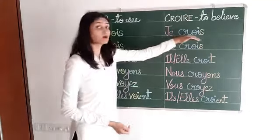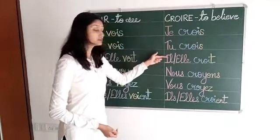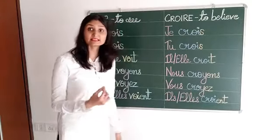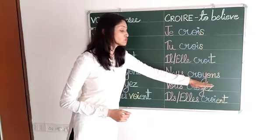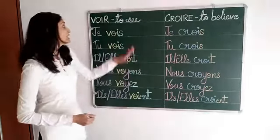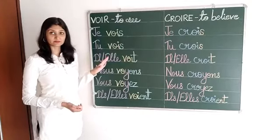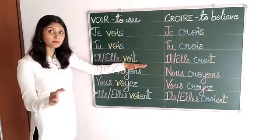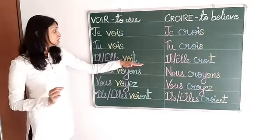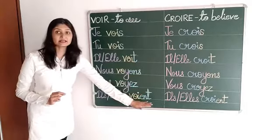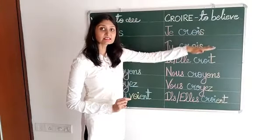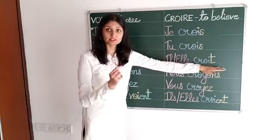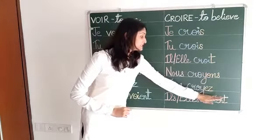The radical C-R-O-I is used for JE, TU, IL, ELLE singular subjects and IL and ELLE plural subjects. But for NOUS and VOUS, the I is changed into Y, giving C-R-O-Y. Now after that you are going to put the terminations. For the third group of verbs: S, S, T — but here, while the radical ends with a vowel, we use T — then ONS, EZ, and ENT. Same thing in verb CROIRE: S, S, T because the radical is ending with I, the vowel, so we put T termination, then ONS, EZ, ENT.